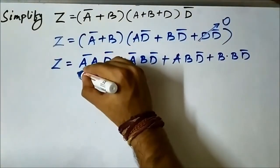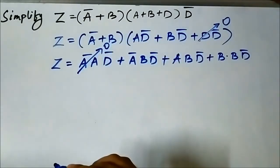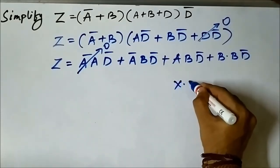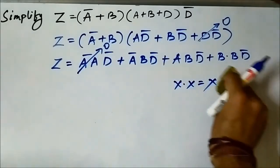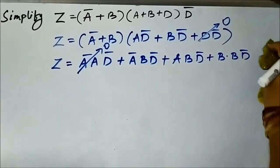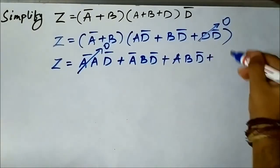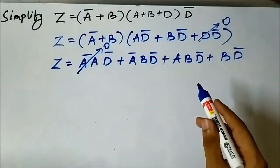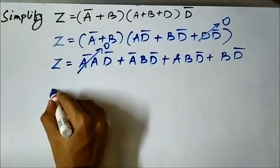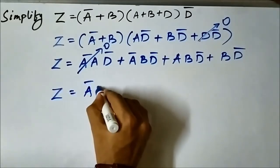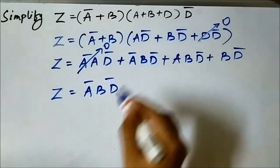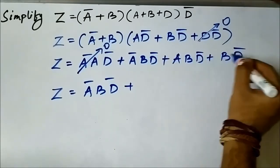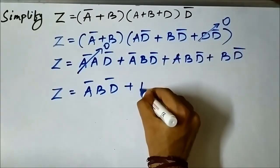Since a·ā = 0 that term vanishes, and b·b = b (any Boolean variable ANDed with itself gives itself). So b·b·d̄ simplifies to b·d̄. We are left with: z = ā·b·d̄ + a·b·d̄ + b·d̄. Notice that b·d̄ is common in the last two terms.